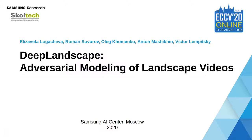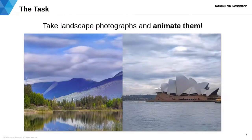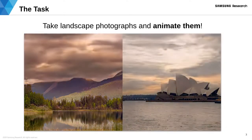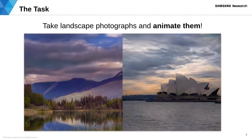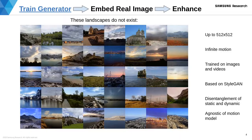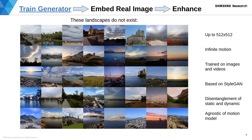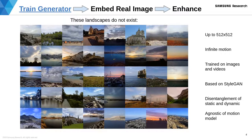We present a system that can take a photograph and generate a time-lapse video with changing time of day and weather. It has three major components. The first one is a generator, which can produce synthetic landscape images and infinite videos with resolution up to 512x512.